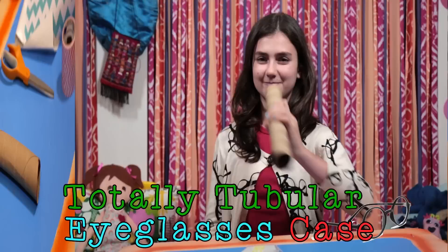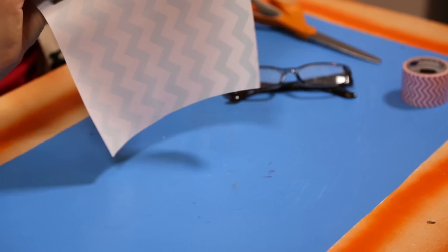Flatten a paper towel roll. Now cut it a little longer than the length of your glasses. Cover the roll with shelf liner. Finally, tape one end closed.